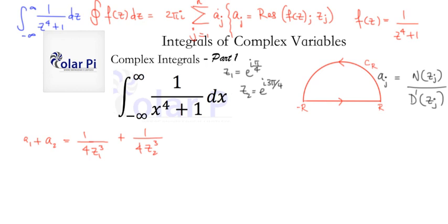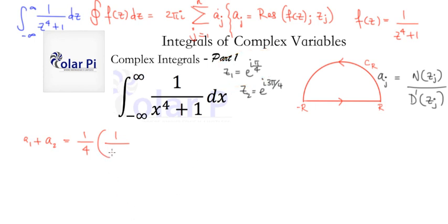Notice that 1/z₁ is right here, so 1/z₁³ equals 1 over e to the i times 3π/4 after we cube it. And then it's plus 1 over e to the i times 9π/4.